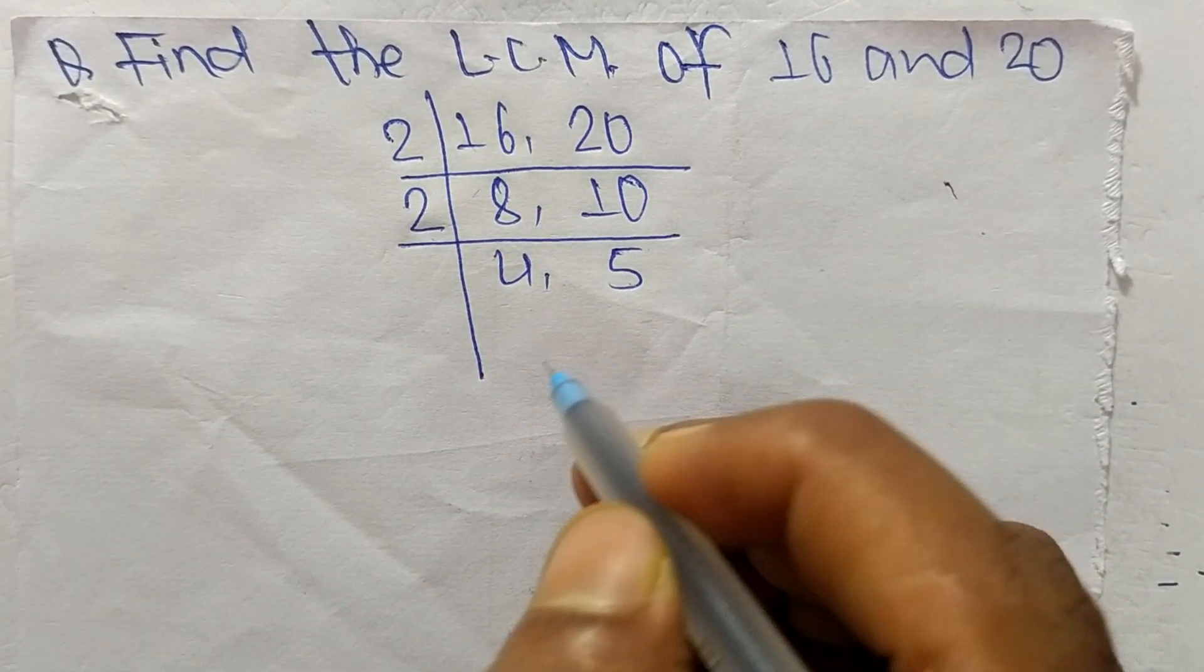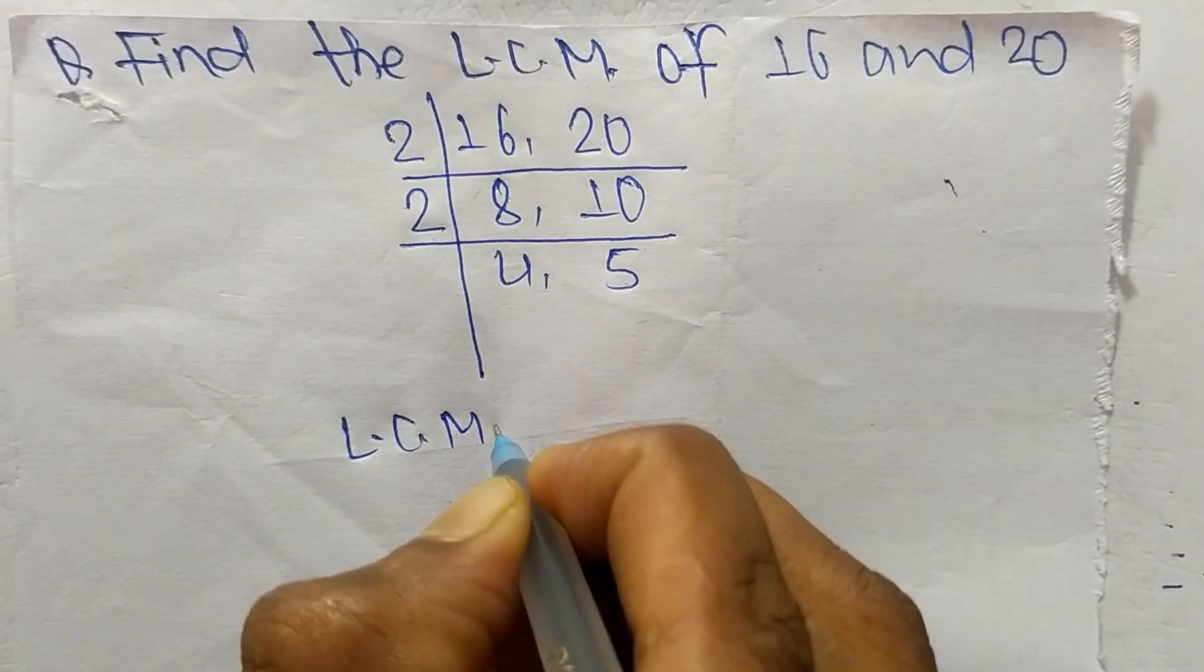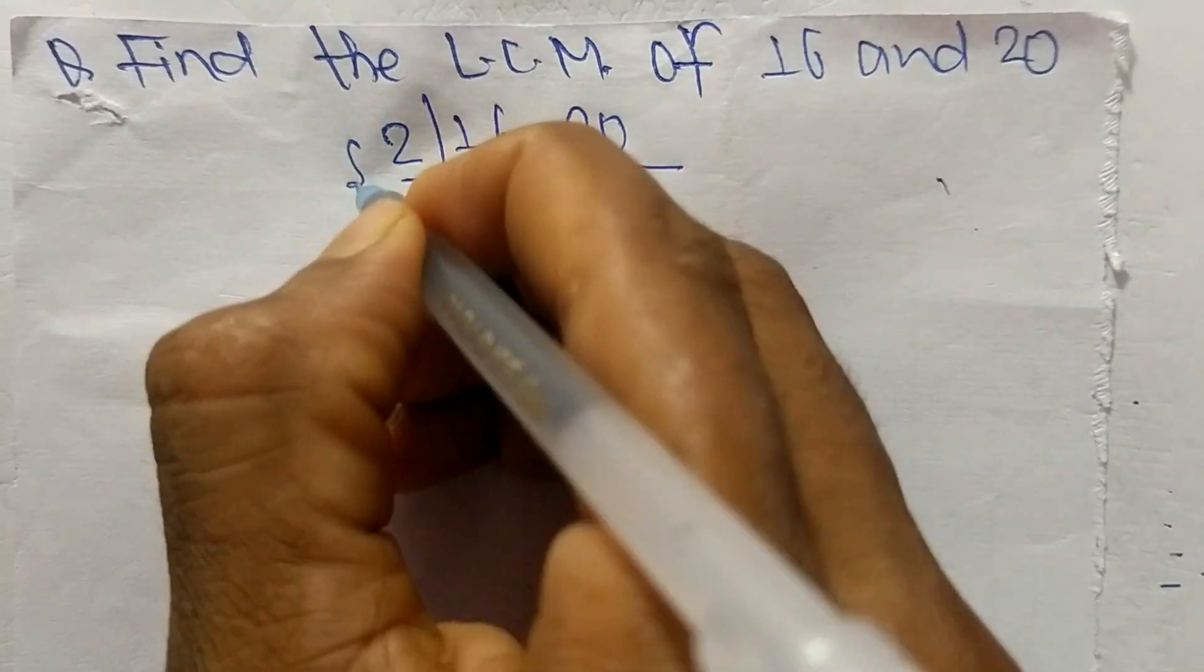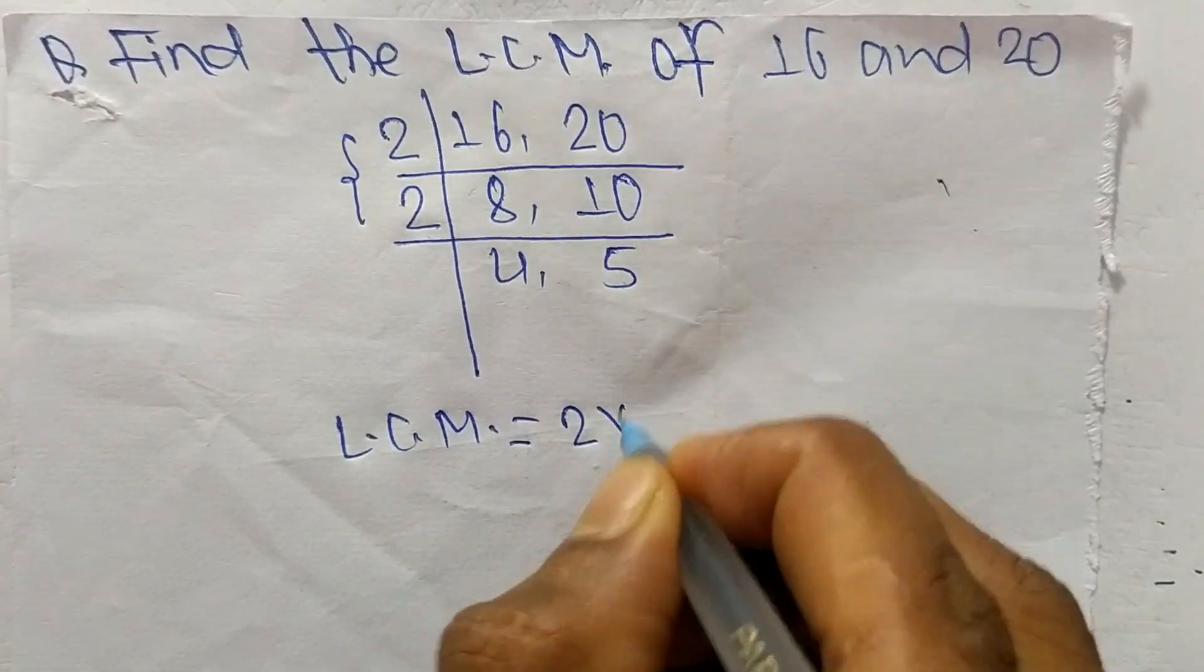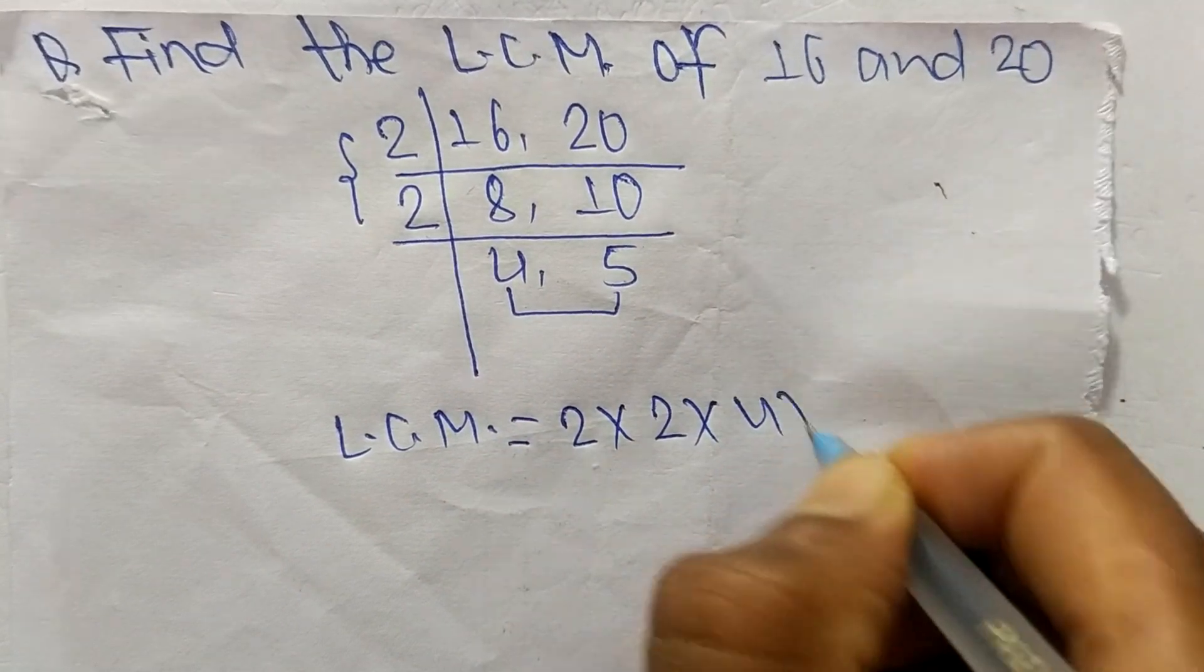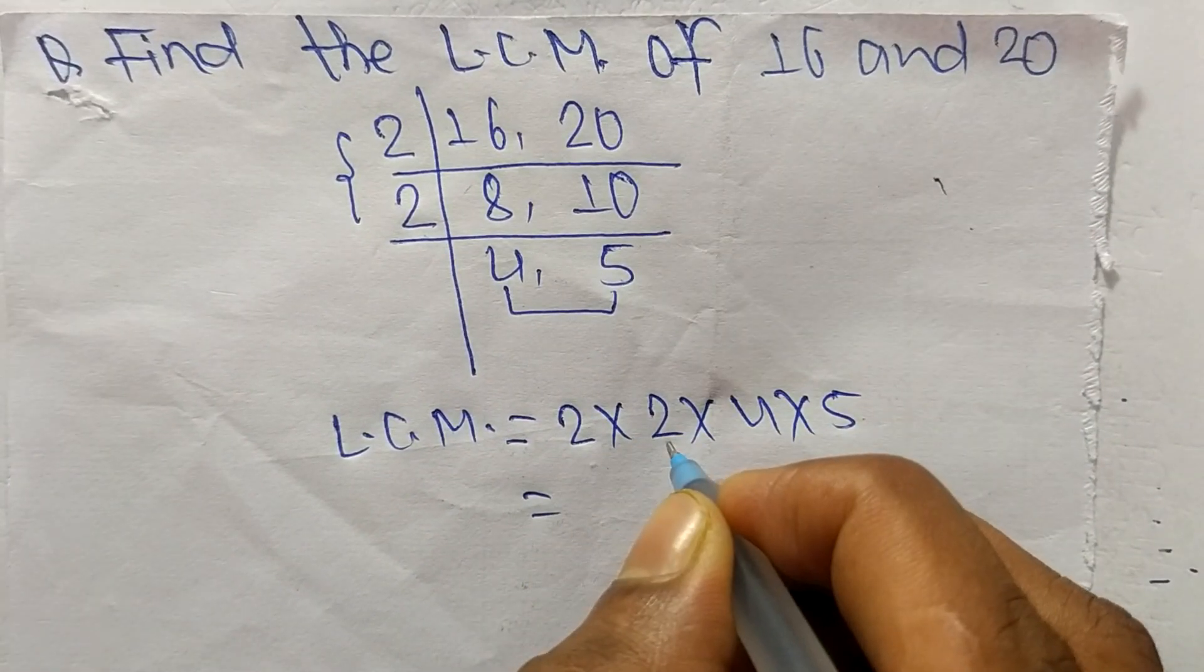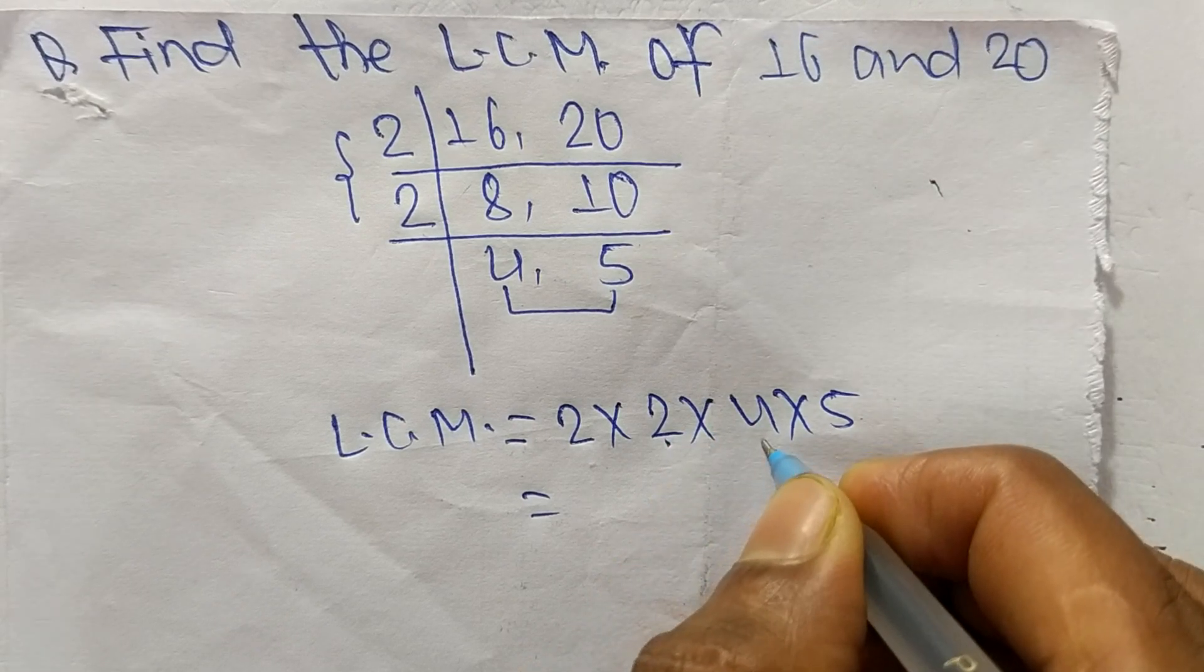So its LCM is equal to, from this part it is 2 times 2, and from this part it is 4 times 5. So 2 times 2 means 4, 4 times 4 is 16, 16 times 5 means it is 80.